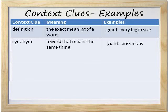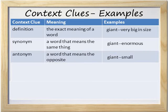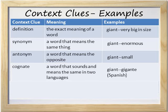How about a synonym of giant? Remember that a synonym is a word that means the same thing. One synonym of giant is enormous. Antonym — remember that an antonym is a word that means the opposite. An antonym of giant is small.